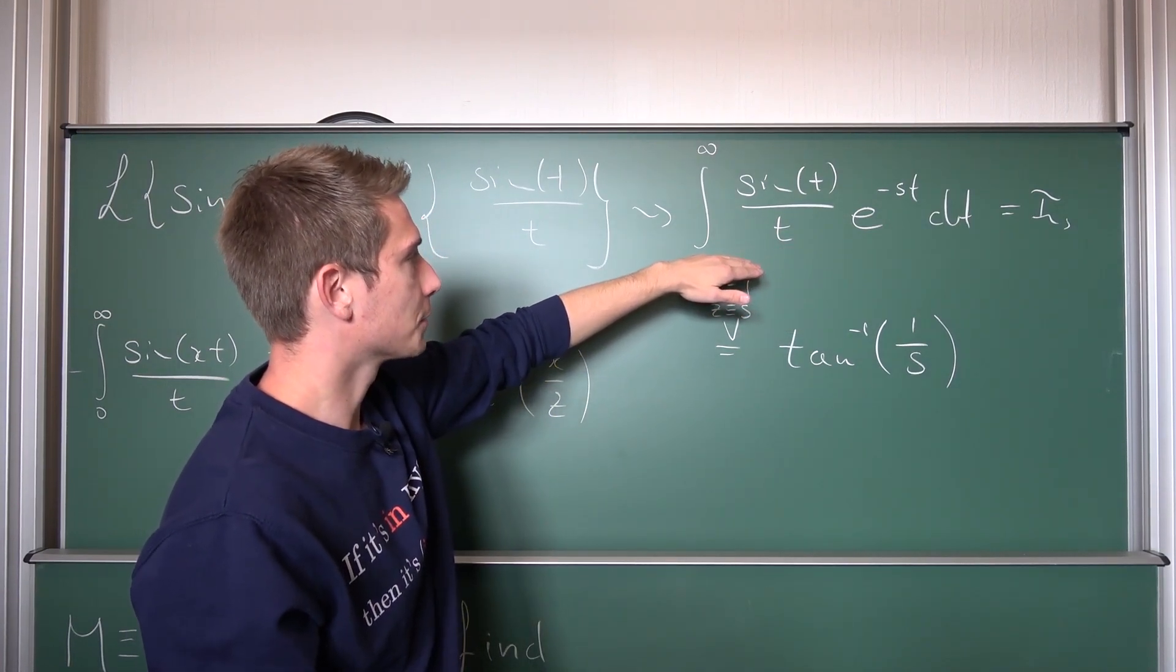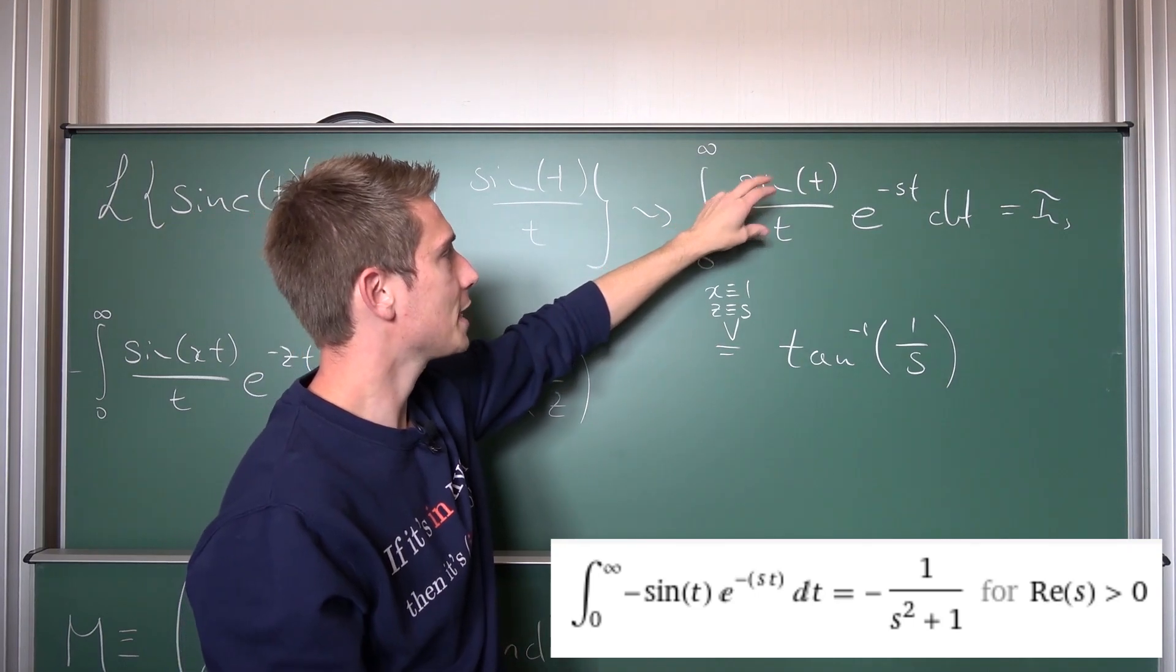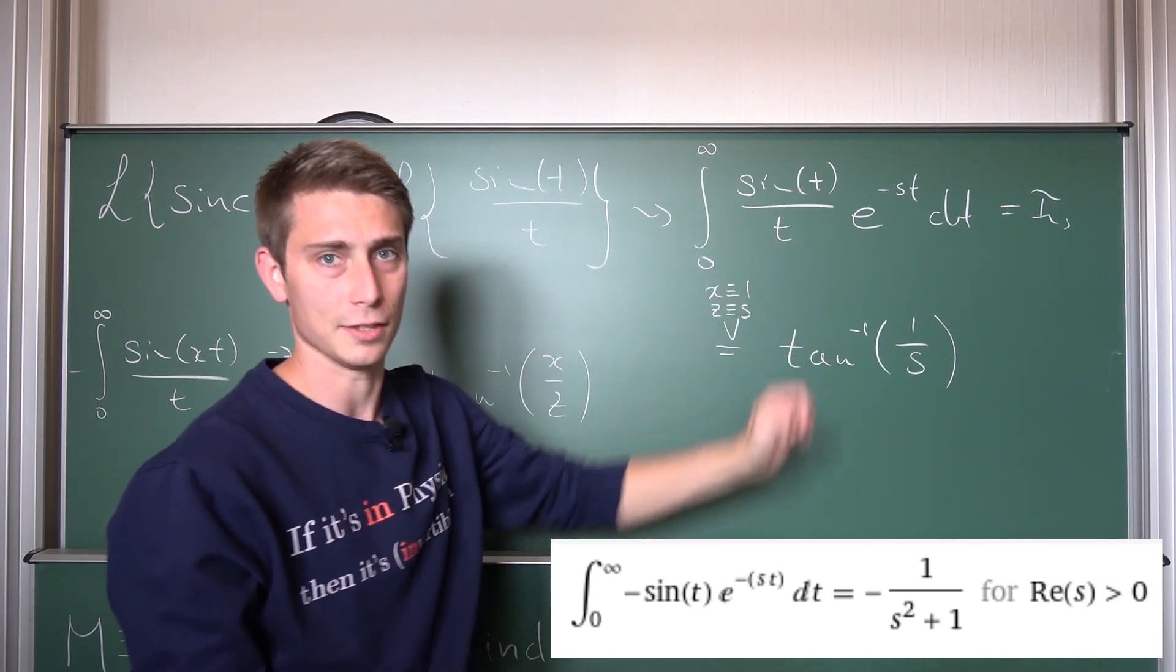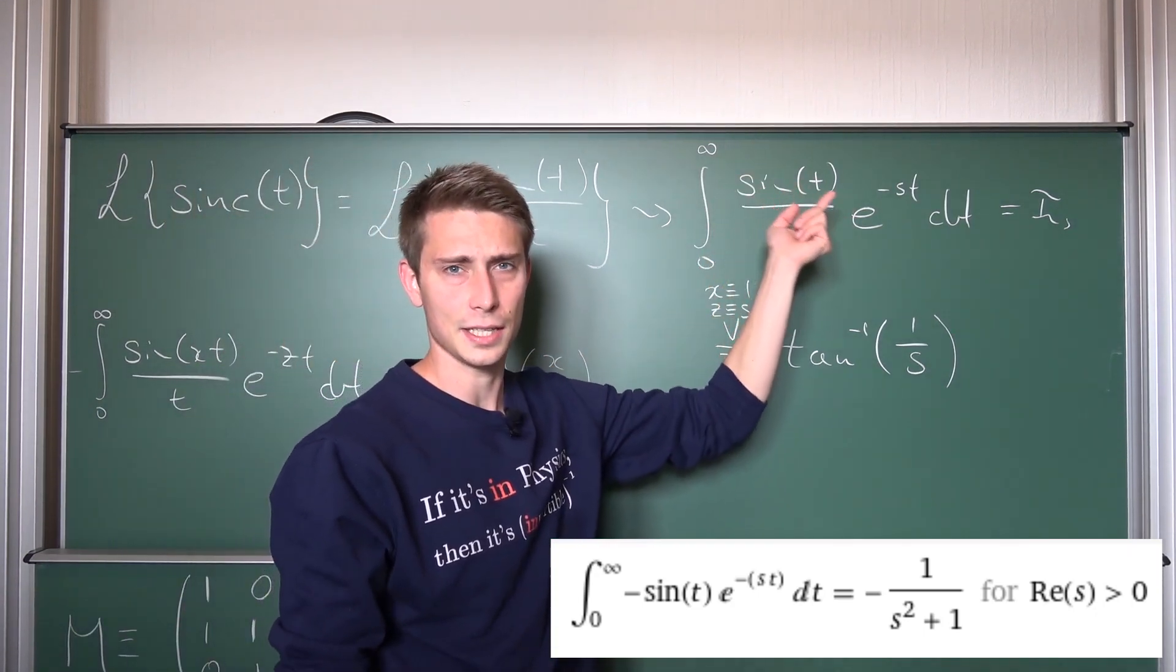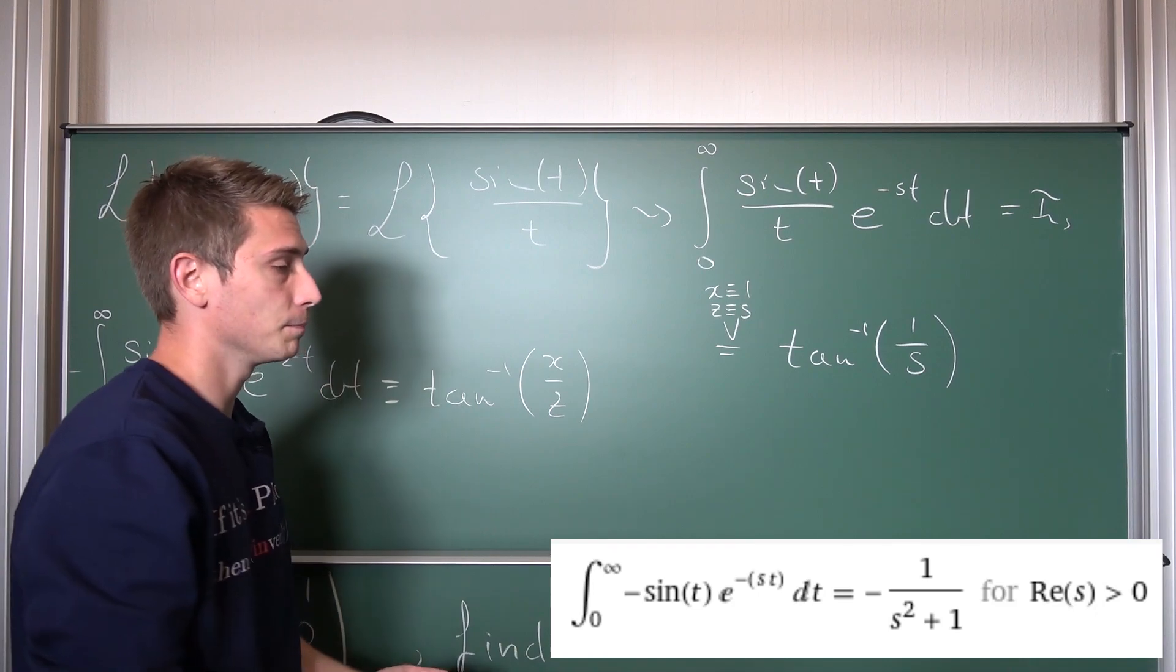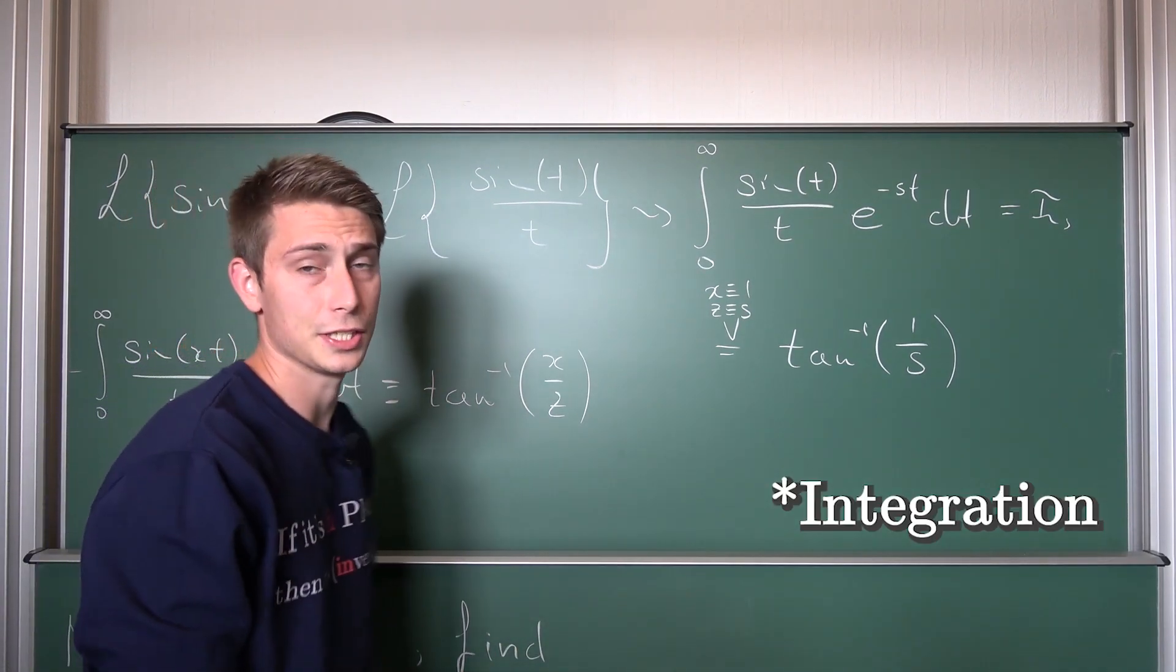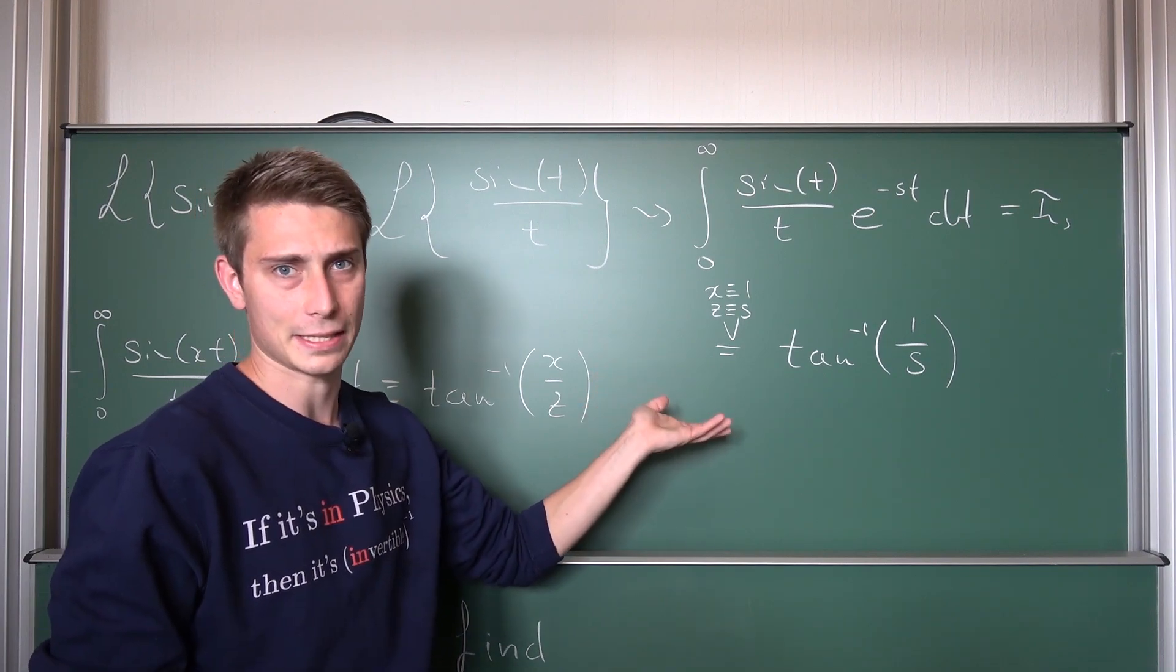Overall, the differential of the integral of sine of t times e to the negative st dt. What you then do is evaluate this integral using simple partial integration by parts, basically. And well after that you are basically done.